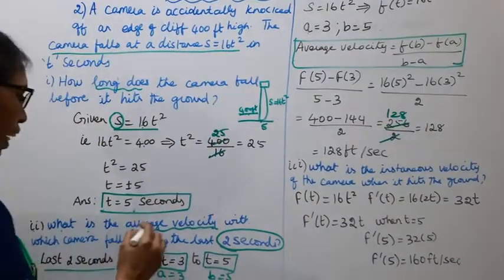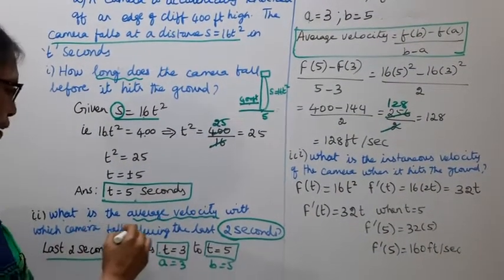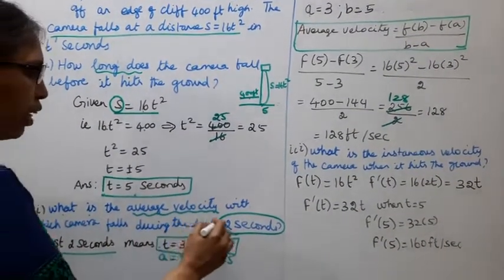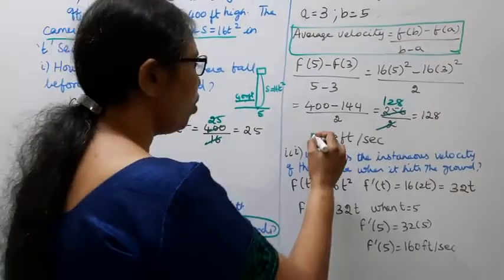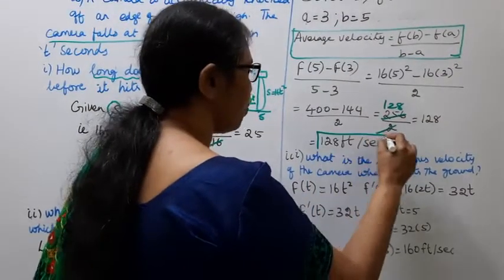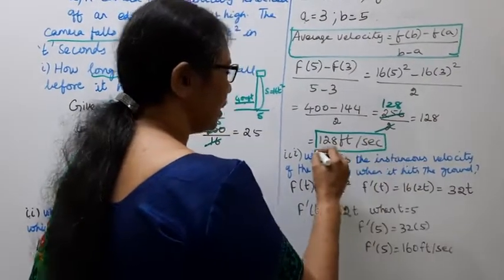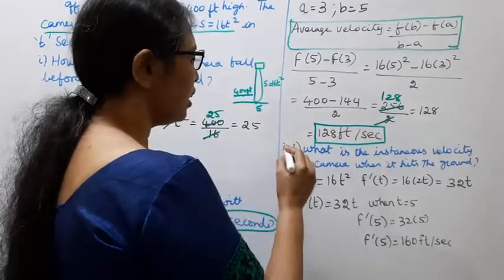The average velocity with which the camera falls during the last 2 seconds is 128 feet per second.